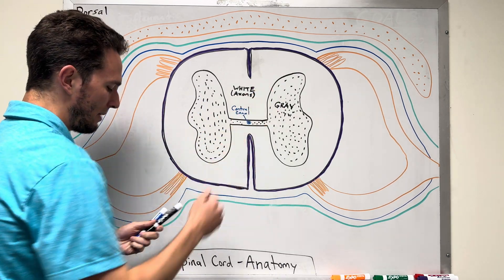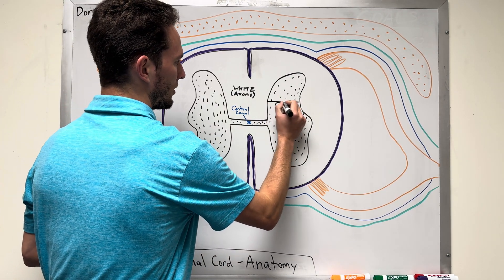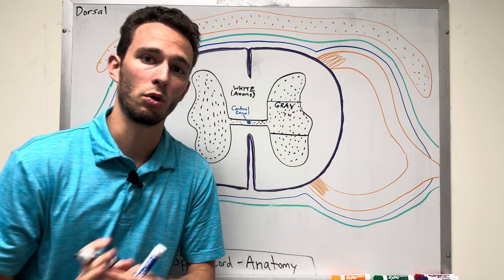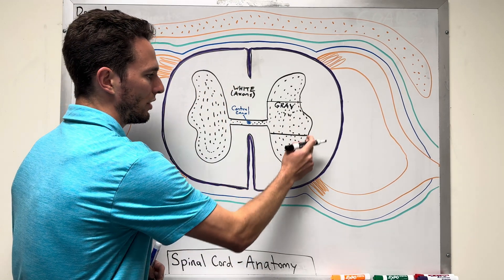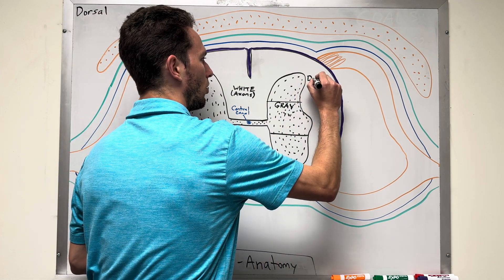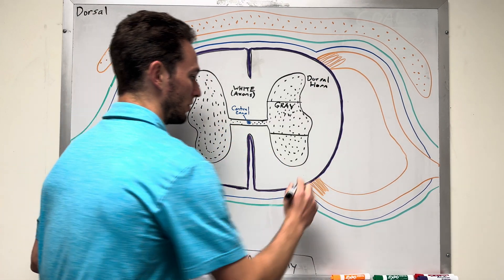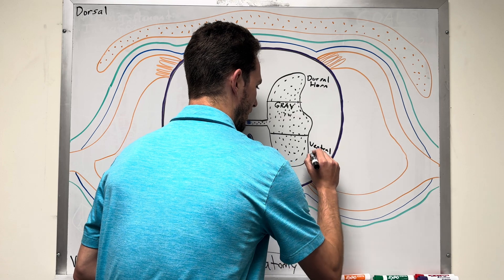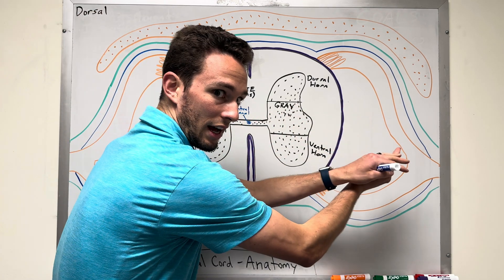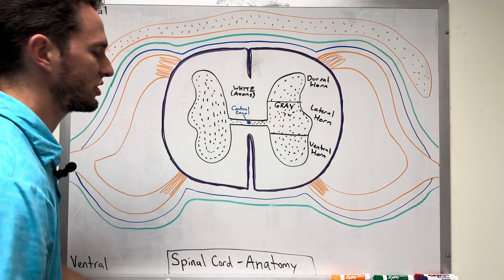The gray matter has four main sections, all called horns because they have a little pointed end. The back side is the dorsal horn, the front side is the ventral horn, and the middle one — which sits more on the outside — is called the lateral horn of the gray matter. All of these are processing regions.